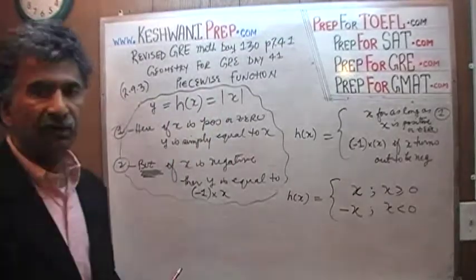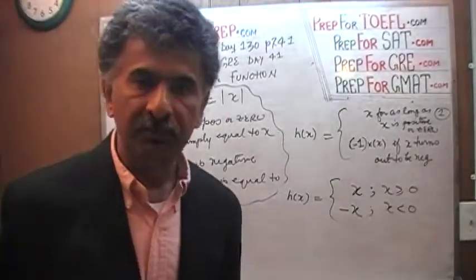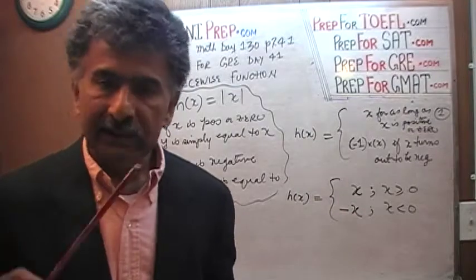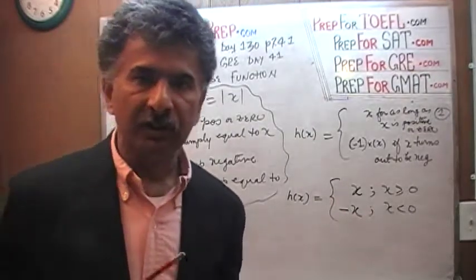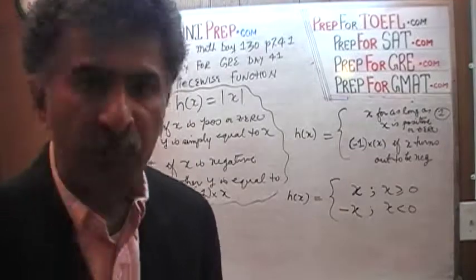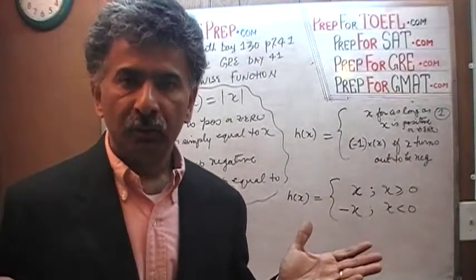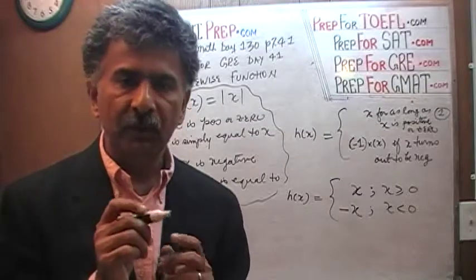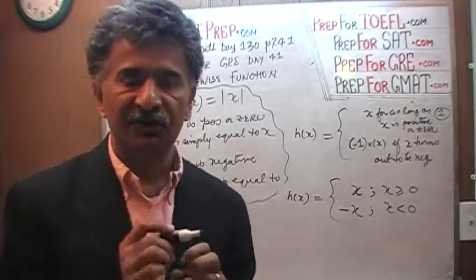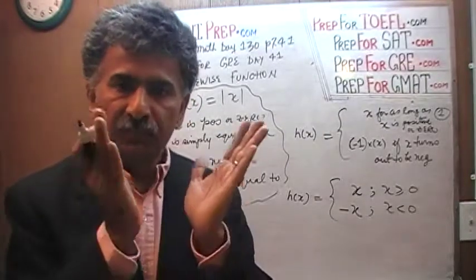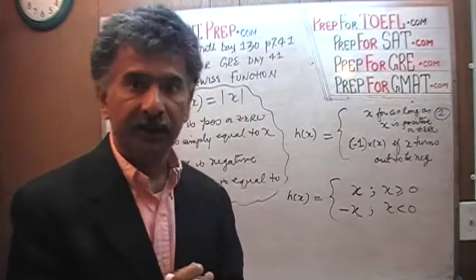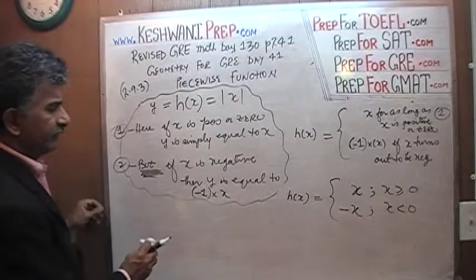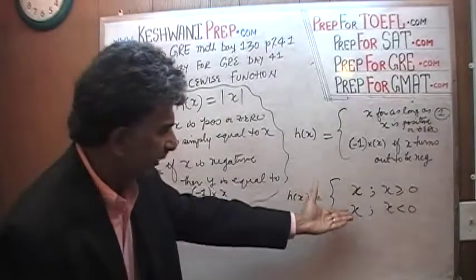Piecewise function — because this function, this relationship between x and y, is not just made up of one continuous part, but it is made up of two parts. Abruptly, all of a sudden, the shape changes. It's made up of two parts. Let's plot them, shall we? Now we're going to plot them.